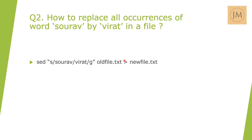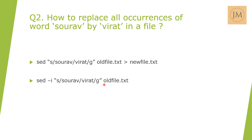The output of this SED instruction is redirected to a new file, so the new file will have the content with 'virat' in place of 'sorrow'. Alternatively, if we need to replace all occurrences in the same file, we can use `sed -i "s/sorrow/virat/g" oldfile`. The `-i` flag edits or modifies the file in place.